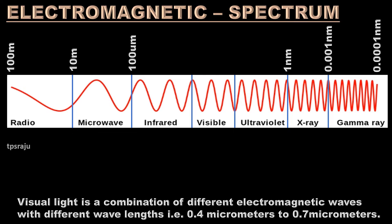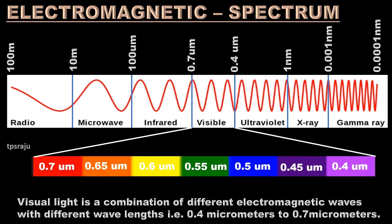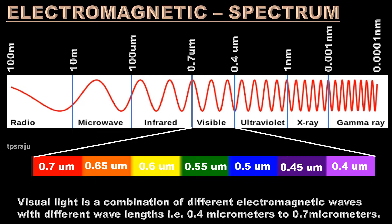It is a combination of different electromagnetic waves with different wavelengths, that is 0.4 micrometers to 0.7 micrometers. The waves which have shortest wavelength, that is 0.4 micrometers, are in violet color. The waves which have largest wavelength, that is 0.7 micrometers, are in red color.